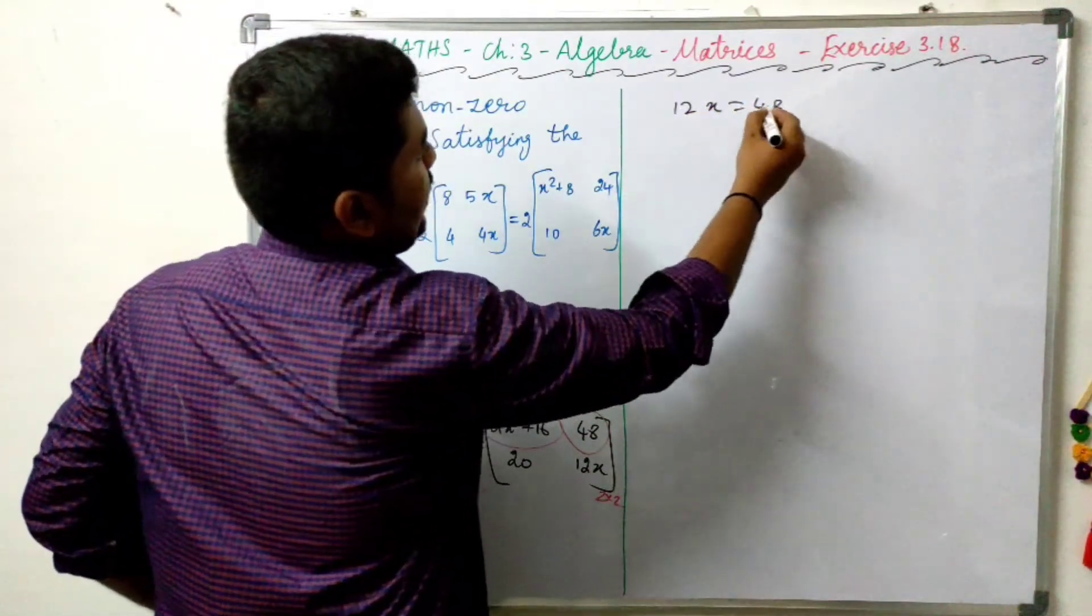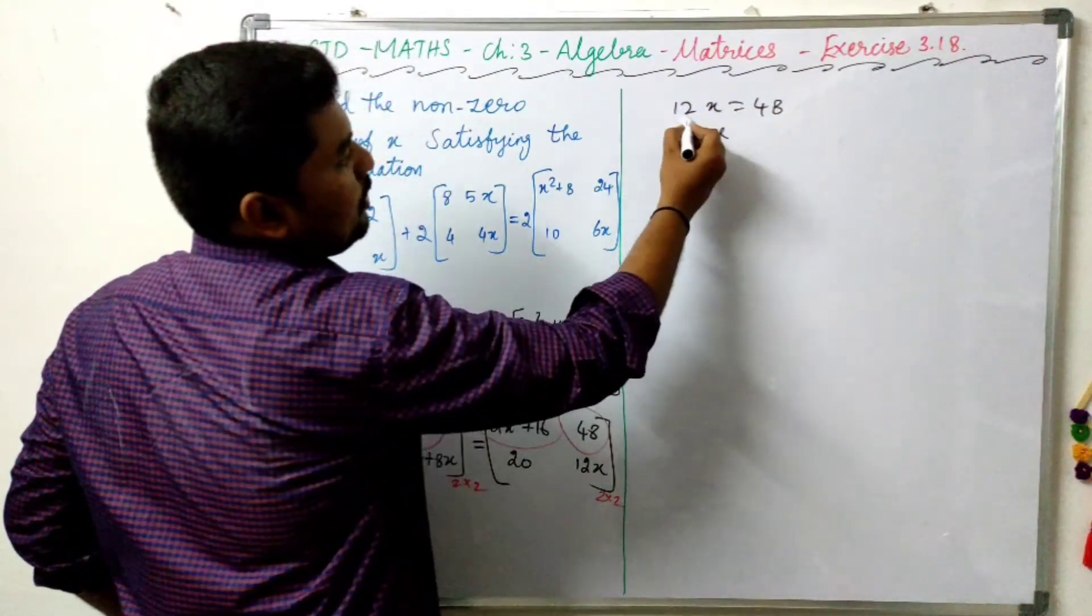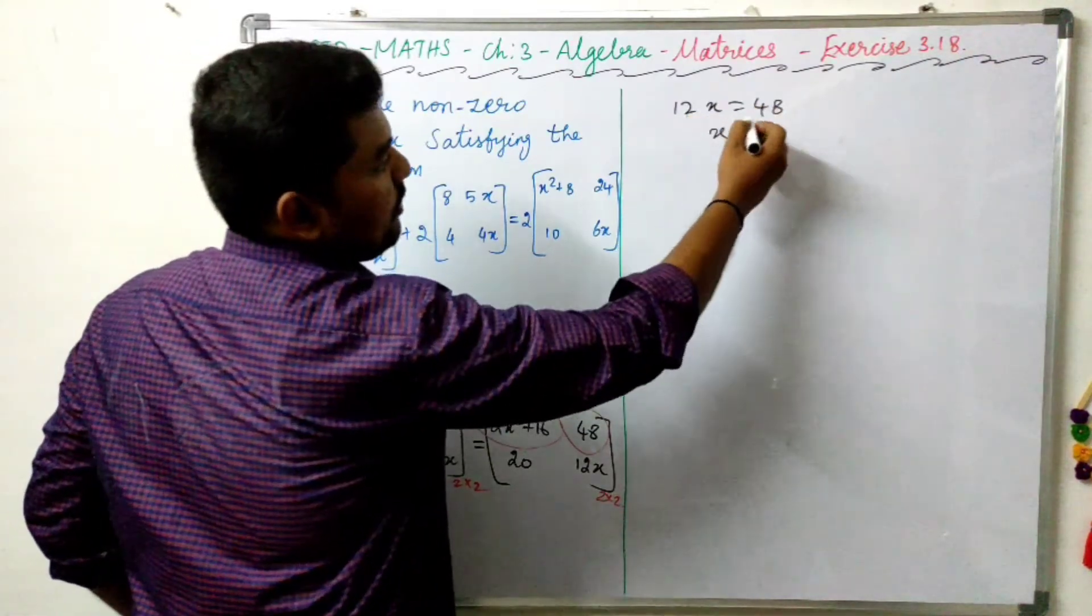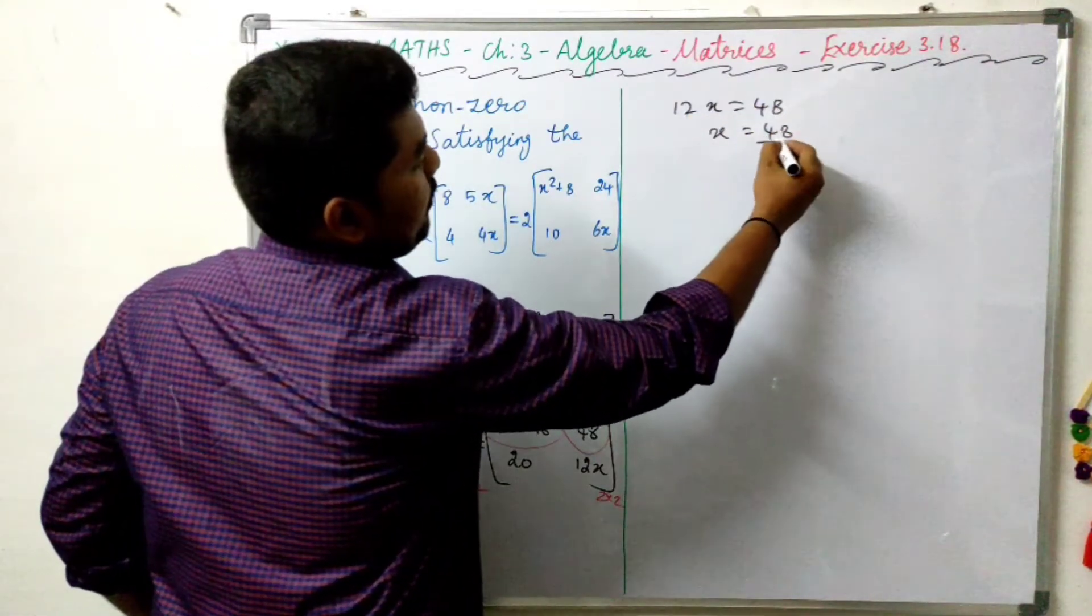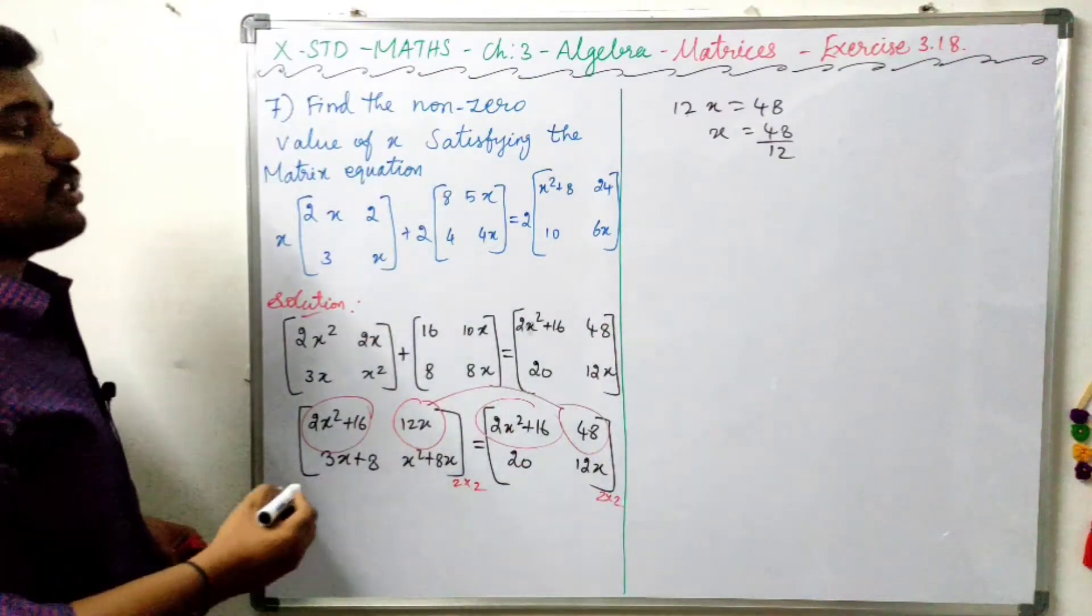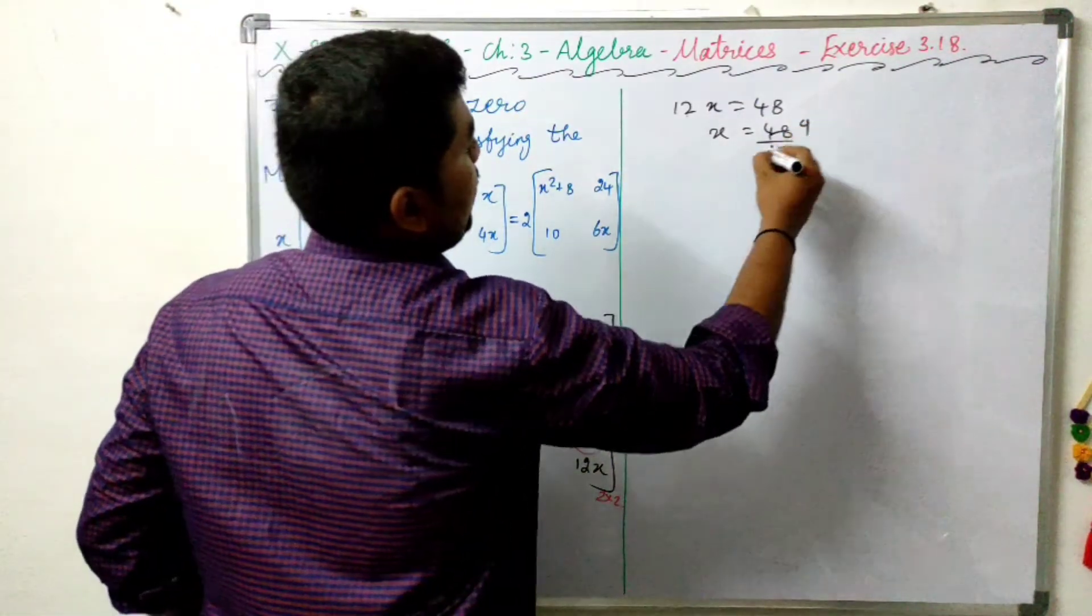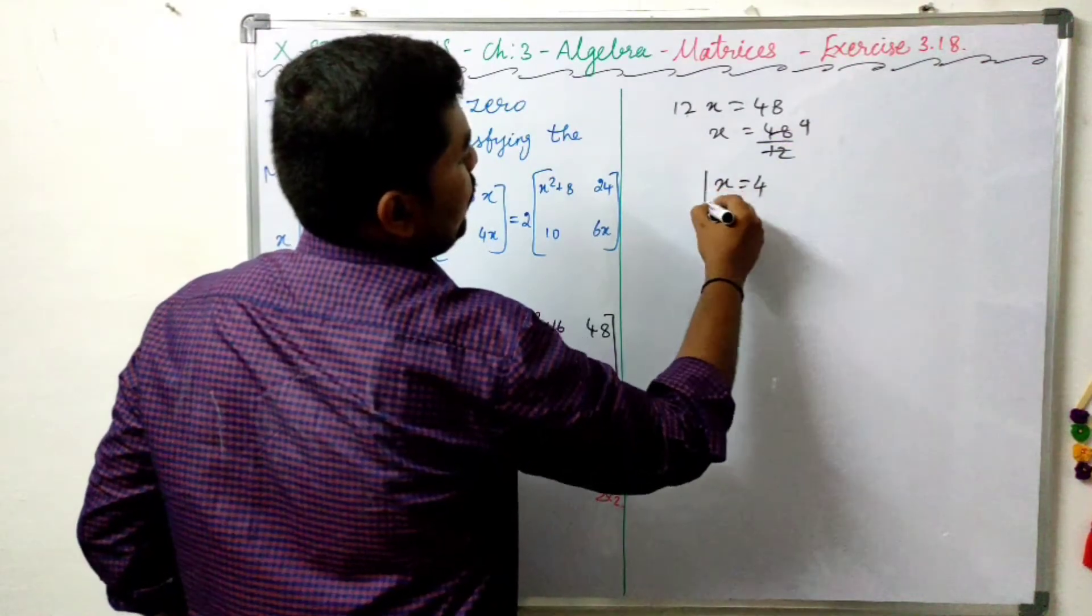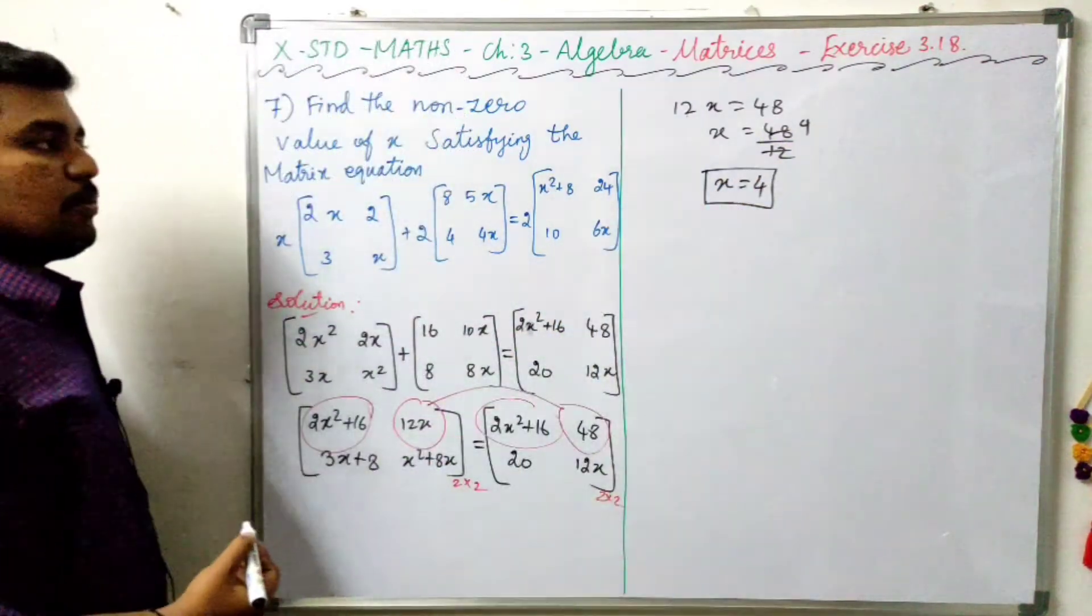12x equals 48. Then we divide by 12. 12 times 1 is 12, 2 times 12 is 24, 3 times 12 is 36, 4 times 12 is 48. So x equals 4.